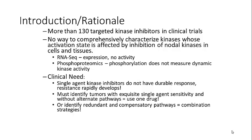Even though some kinase inhibitors have very strong initial responses with the shrinkage of a specific tumor, they do not have a durable response and resistance develops. What needs to be done is either identify tumors with exquisite single-agent sensitivity without alternative pathways, and even in highly oncogenic-addicted tumors such as HER2-positive breast cancer, drugs like Herceptin still develop resistance within a short period of time. The alternative is to identify redundant compensatory pathways that become activated in response to single-agent inhibition, allowing rational predictions for combination or combinatorial strategies.